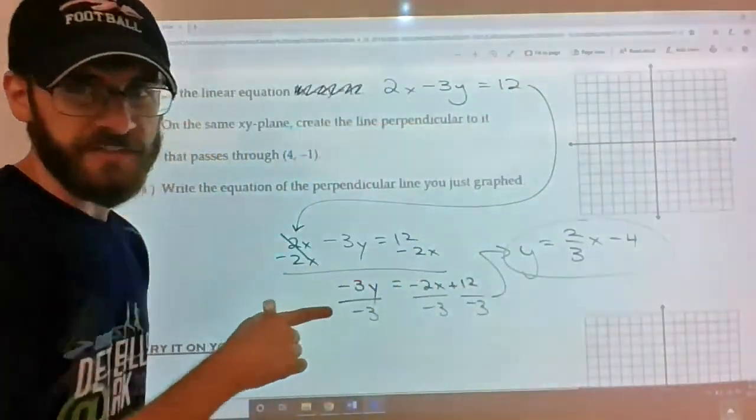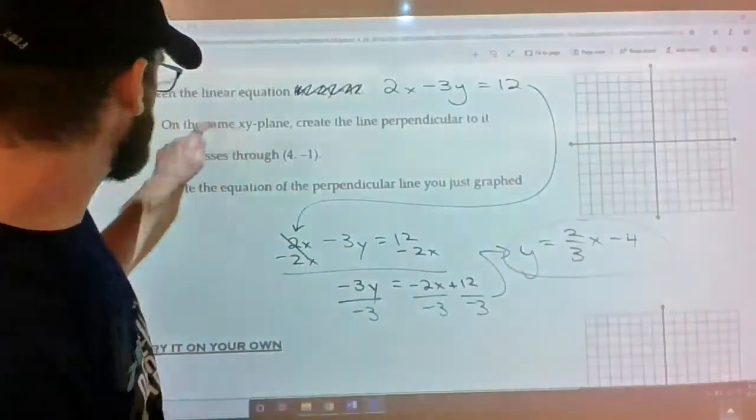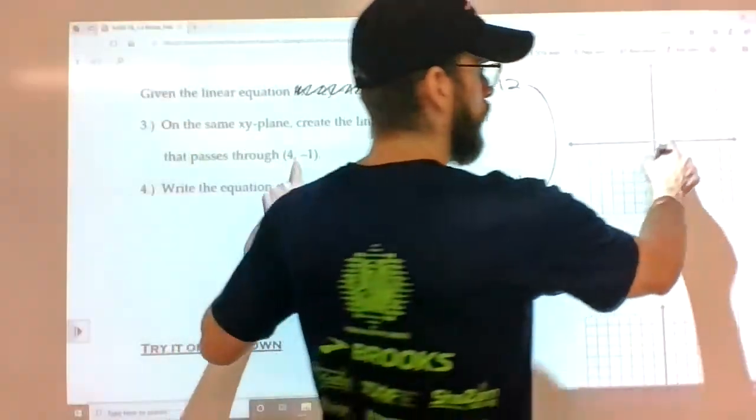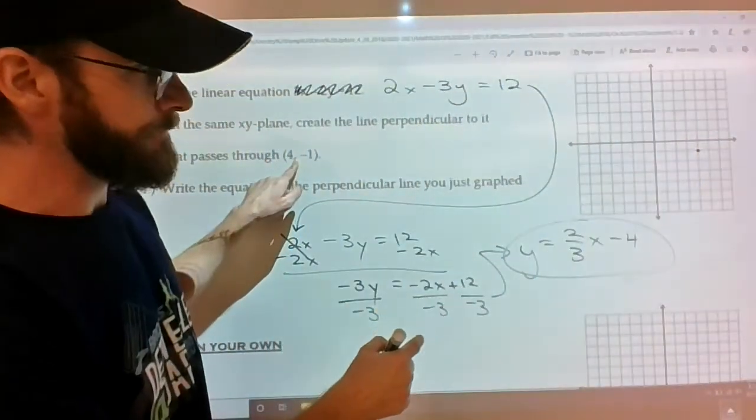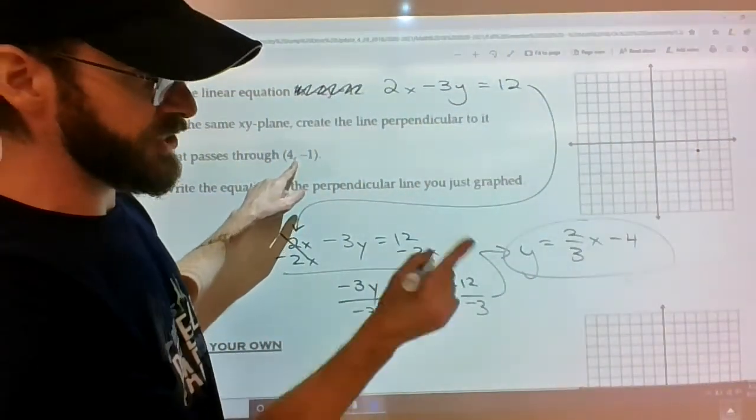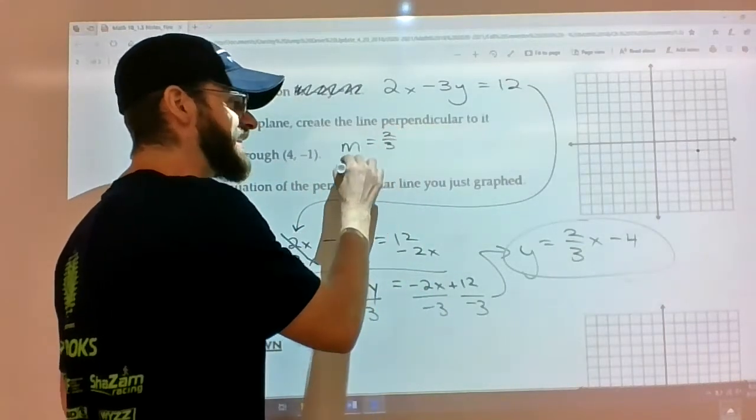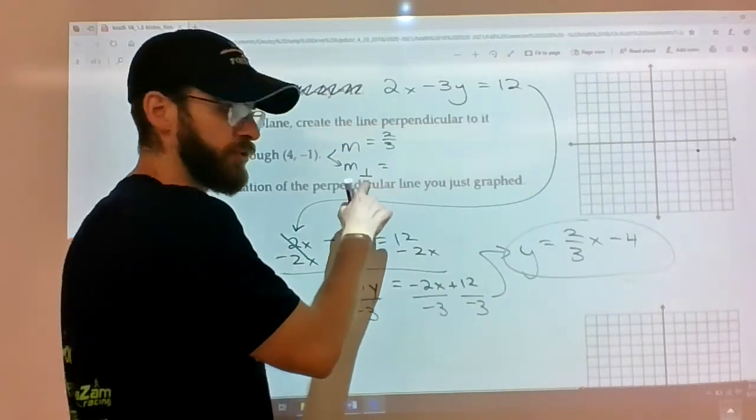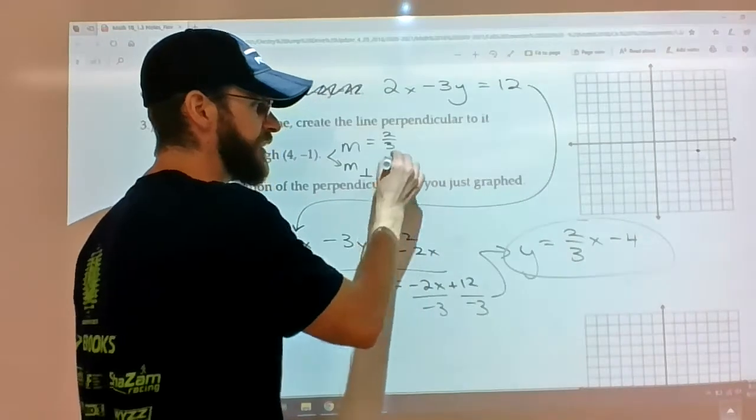Alright, so that gives us the original equation's slope of 2/3. We know that this line perpendicular to it has to go through (4, -1). This tells us that if the slope of the original line is 2/3, if m equals 2/3, then m that's perpendicular to it is the flip of it, and you make it negative.